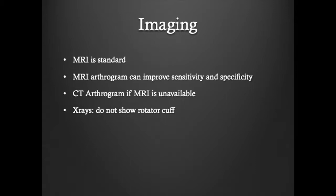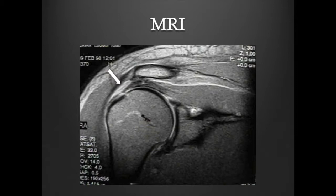This is an MRI showing a rotator cuff tear. The arrow shows a white area where the rotator cuff is torn and fails to insert on the humeral head.